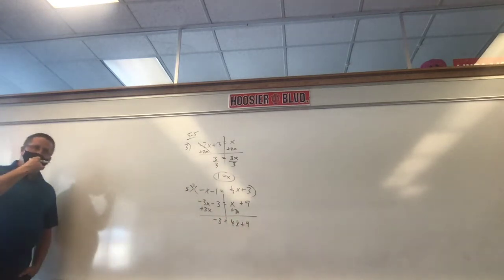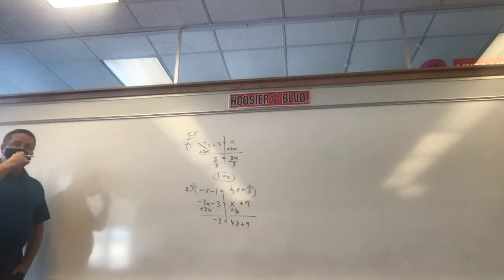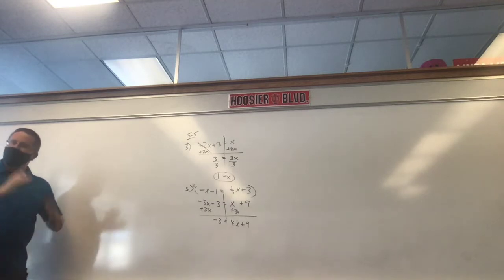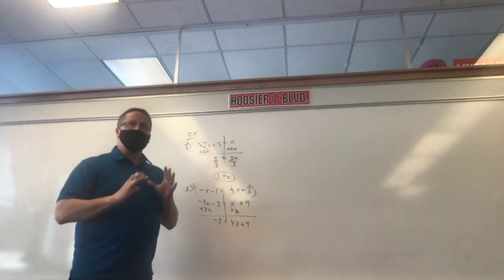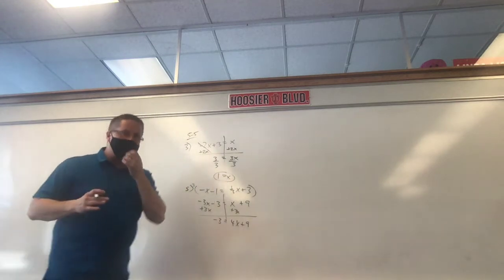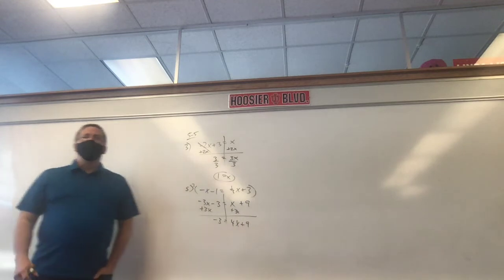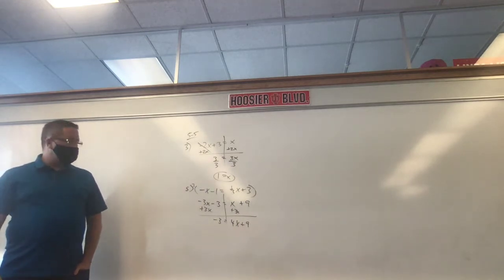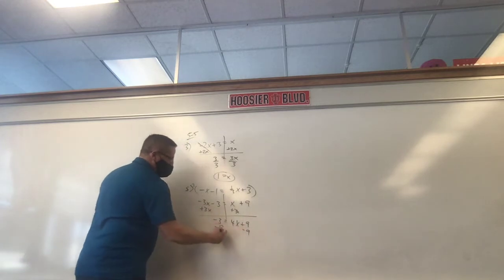Not to pick on anyone, but what do we need to get rid of to get x by itself? Our goal is not to get rid of x — it's to get it by itself. Get rid of 9 and 4. Which first? 9, because it's farther away from x. So we minus 9 from each side. We have negative 12 equals 4x.